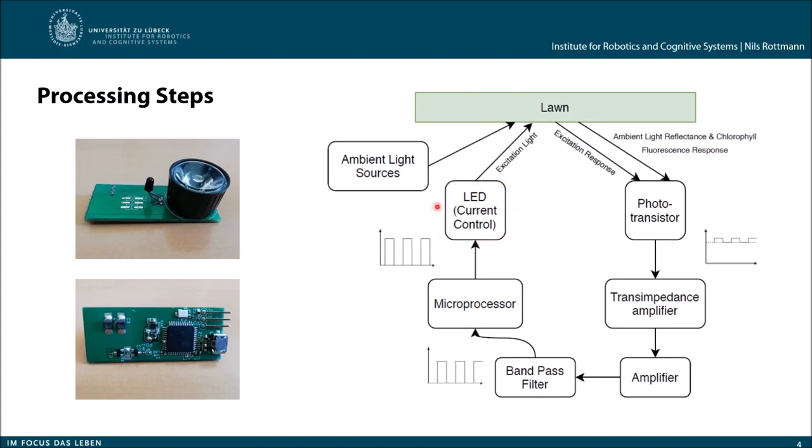The LED sends an excitation light to the lawn. This excitation light has a wavelength of roughly 430 nanometers and excites the chlorophyll fluorescence.